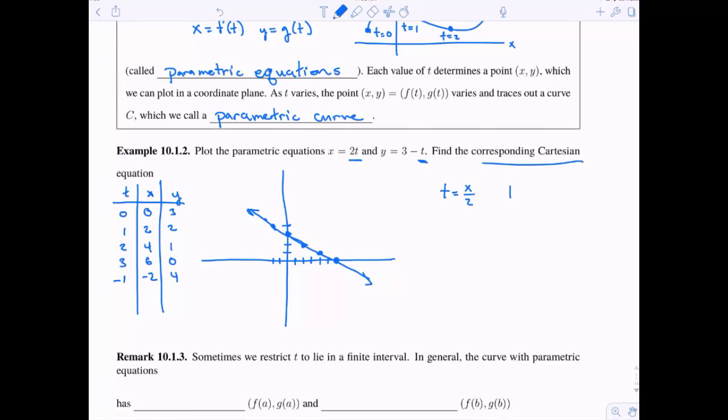So for instance, for my x equation, I could divide by 2 and get t equals x over 2. For my y equation, I could add t on both sides and then subtract y on both sides to get t equals 3 minus y.